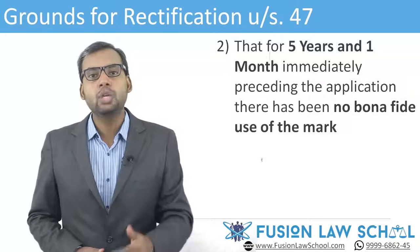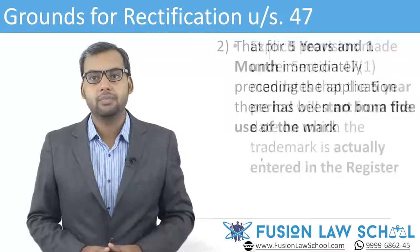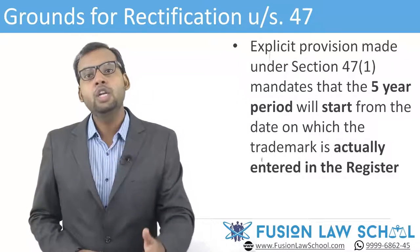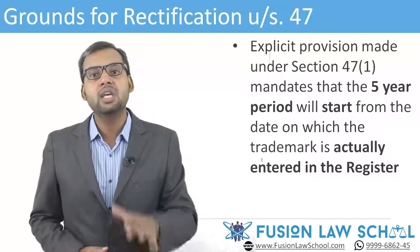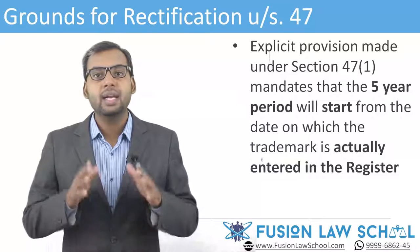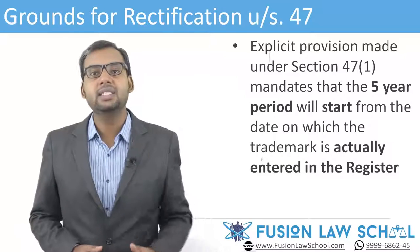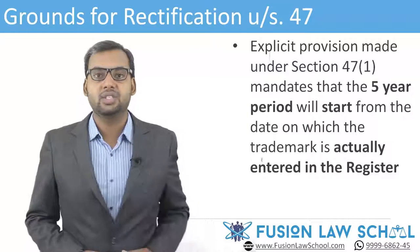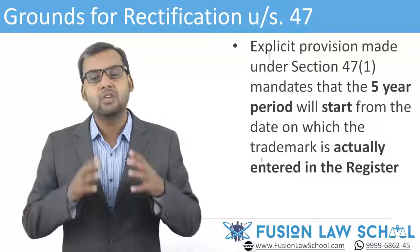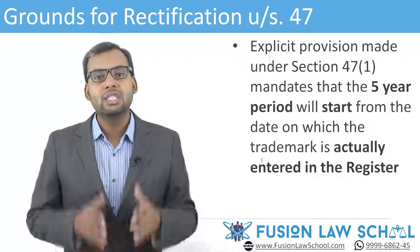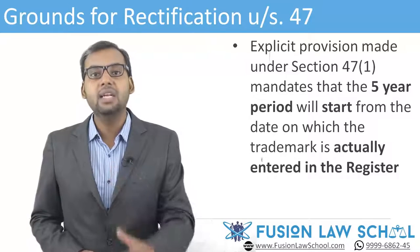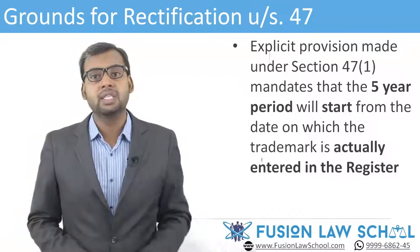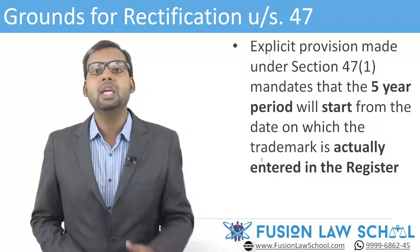Unless the trademark is actually placed on the register, it cannot be a registered trademark under section 47 subsection 1. The law has explicitly clarified that a continuous period of five years will start from the date on which the trademark is actually entered in the register under section 23. When a trademark is registered, it is registered as of the date of making the application, and that date is deemed to be the date of registration. However, the explicit provision under section 47 mandates that the five-year period starts from the date of actual entry in the register, not the date of application, clearing the ambiguity for this purpose.